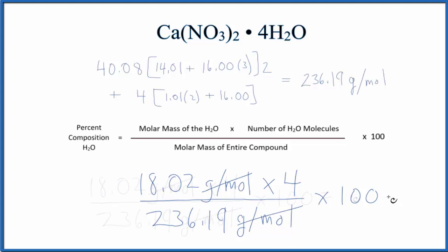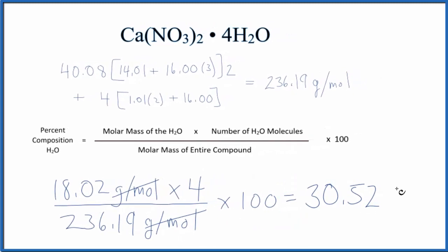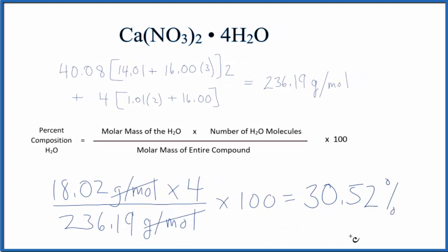We end up with 30.52 percent. What this number means is that if we calculated the entire mass, 30.52 percent of the mass of a sample of this calcium nitrate tetrahydrate would be the mass of the water.